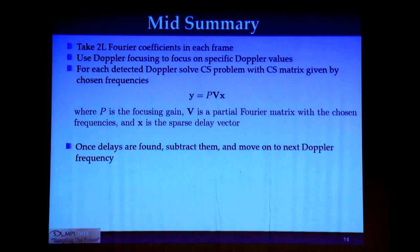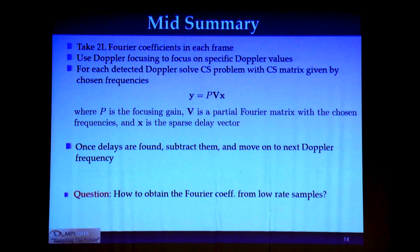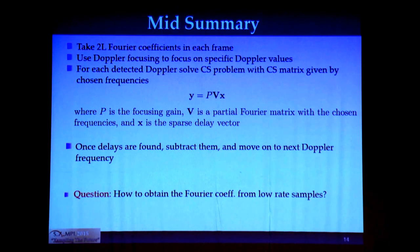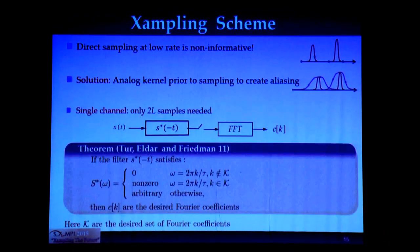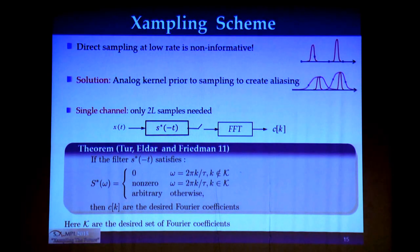To summarize what we've covered: we take 2L Fourier coefficients in each frame, choose a set of frequencies to focus on, apply Doppler focusing, and solve each one-dimensional problem using compressed sensing. For each detected target, we subtract its influence from the received samples. The remaining question is how to extract this frequency information — how to get these Fourier coefficients from a time-domain signal. There are various methods to extract frequency information from a time-domain signal, though some analog complexity needs to be added before the A-to-D stage.